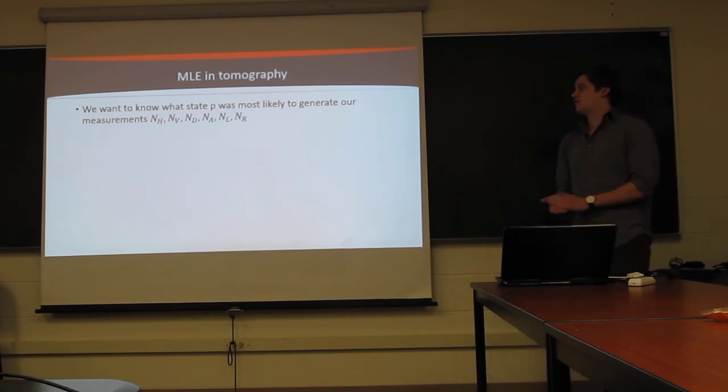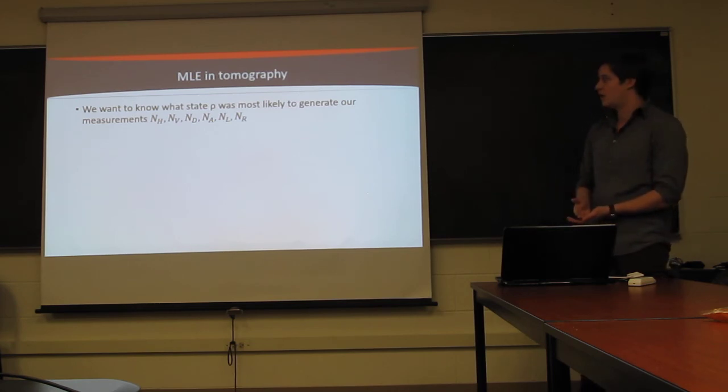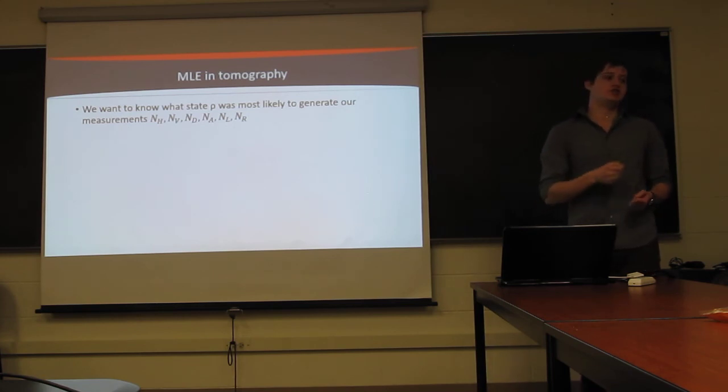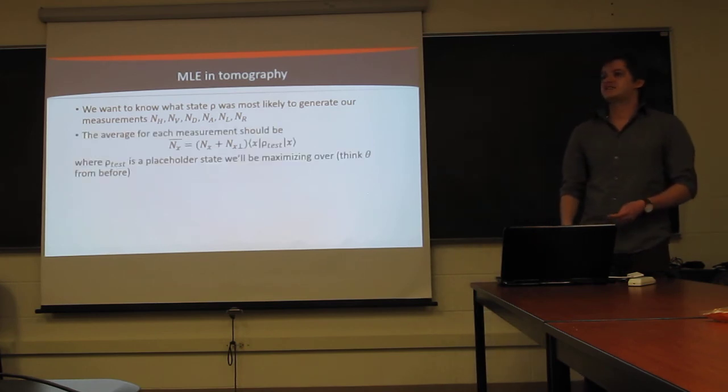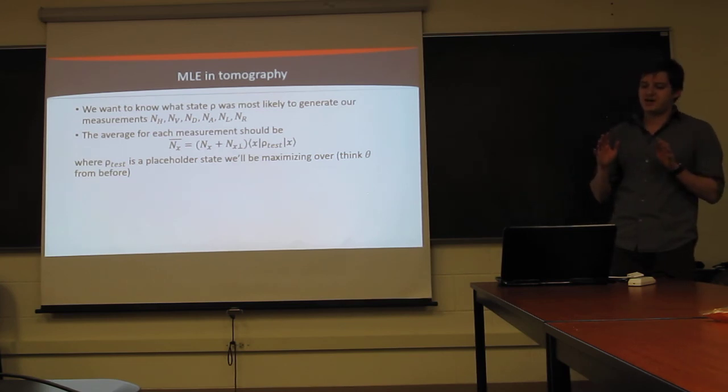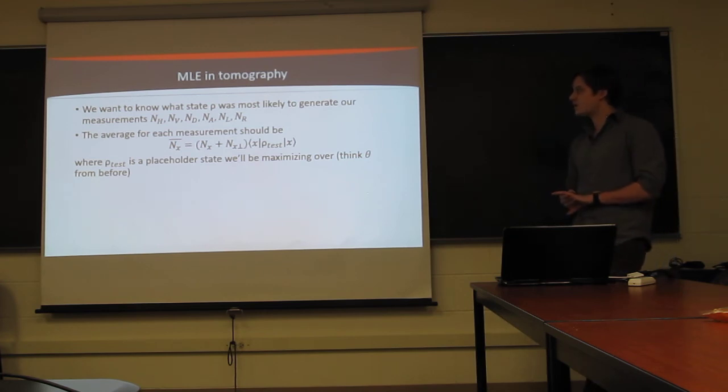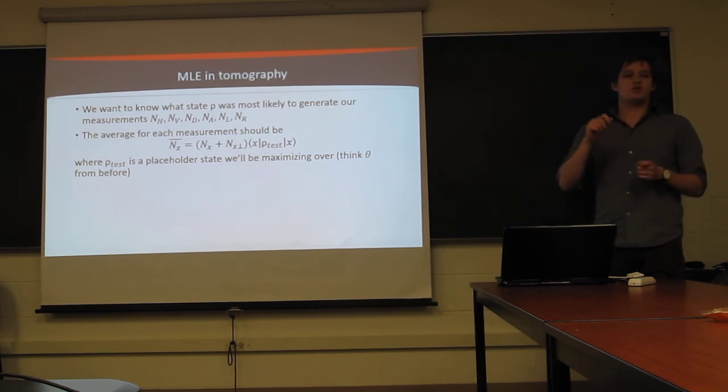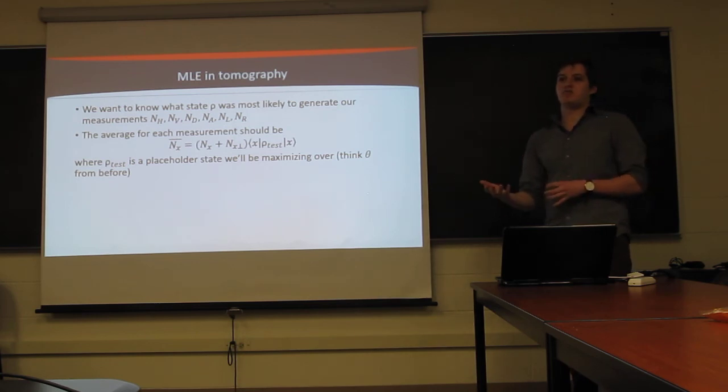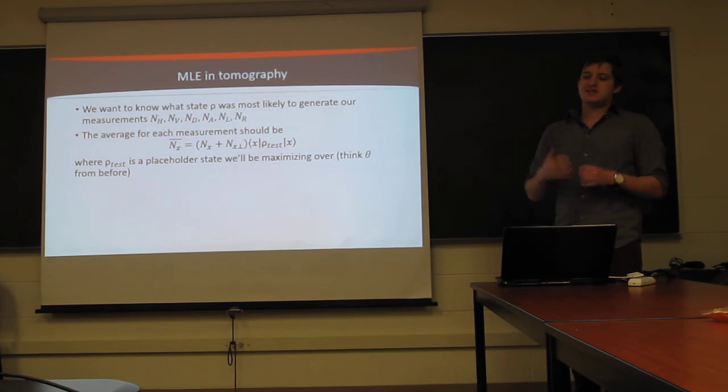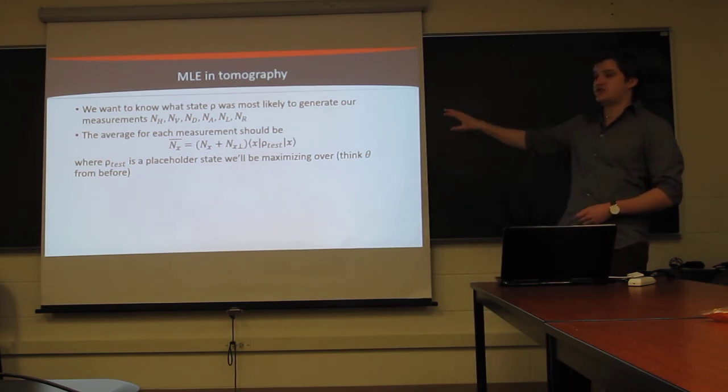All right, so how is this going to affect tomography? So, in a tomography, we have some number of counts for H, V, D, A, L, and R. And we want to know what state was the most likely state to have generated these counts. So, the way we're going to do that is we're going to make some test quantum state. Just basically a quantum state that is filled with variables for all of its entries. And then we're going to take this test state, and we're going to perform the same projections mathematically onto all of the measurement states that we made.